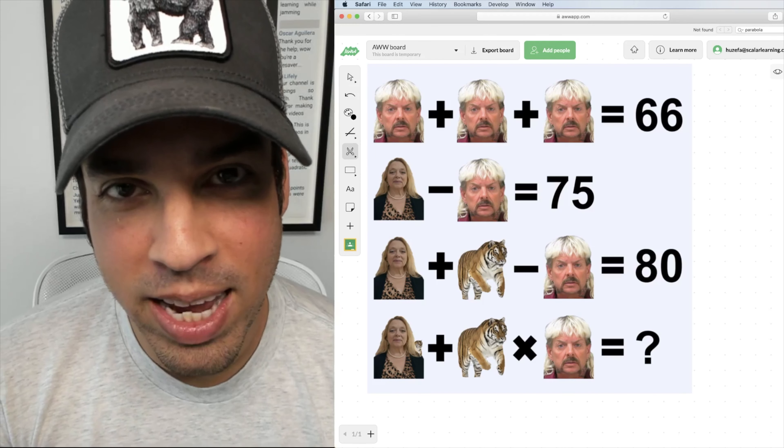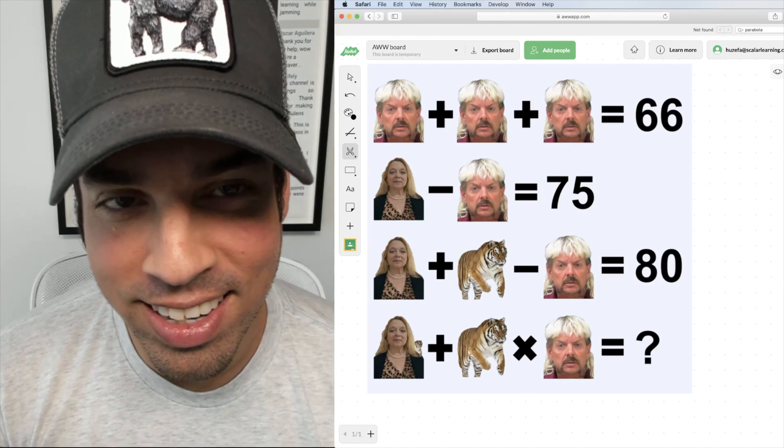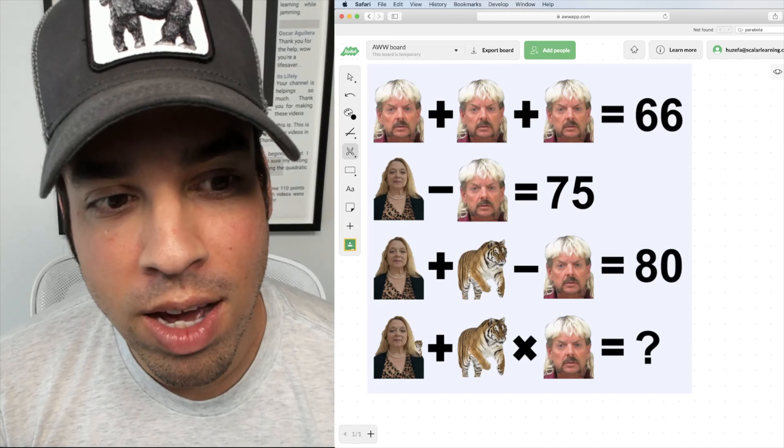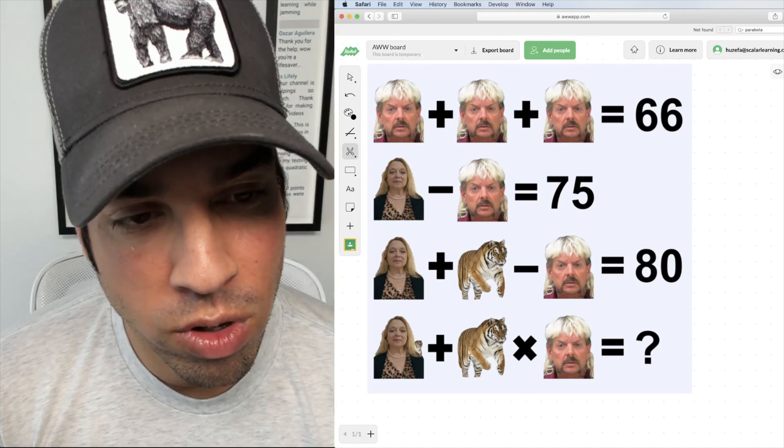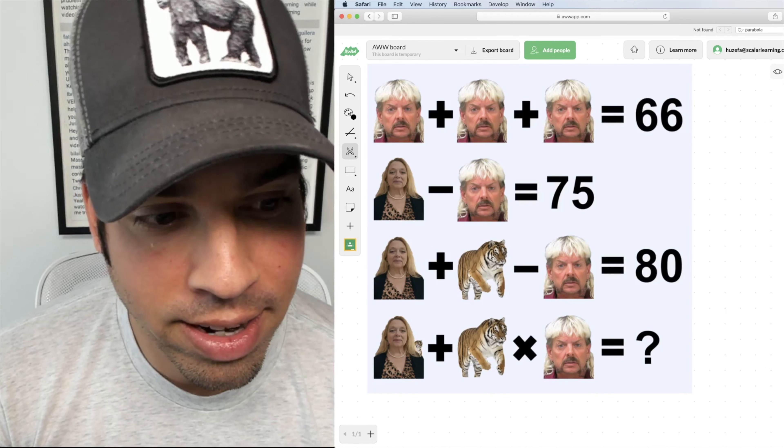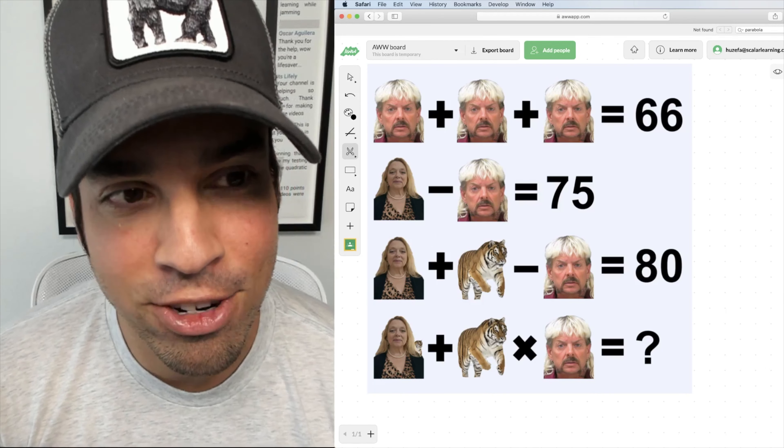What's up guys and welcome back to another math puzzle Tiger King edition. So here we've got a pictorial system of equations starring of course Joe Exotic the Tiger King, Carol Baskin, and a tiger.